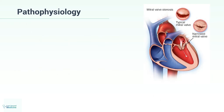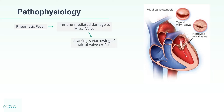Pathophysiology. Rheumatic fever leads to immune-mediated damage to the mitral valve. This occurs as a result of cross-reactivity between the streptococcal antigen and the valve tissue. The resulting inflammation leads to scarring and narrowing of the mitral valve orifice.